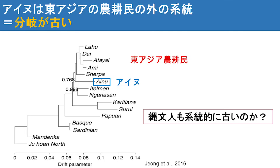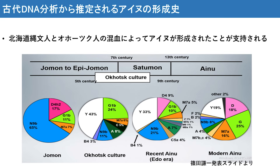アイヌの人々は系統的な分岐は非常に古いということになります。もしアイヌイコール縄文であるならば、縄文人も系統的に古いということになります。しかしながら、最近の古代人のミトコンドリアDNA分析によって、必ずしもアイヌイコール縄文ではないということが示されました。北海道の古代人、縄文人、オホーツク文化人、それからアイヌの人々を分析した結果です。縄文人ではN9bが65%と高頻度で見られます。